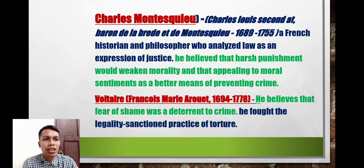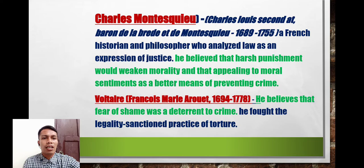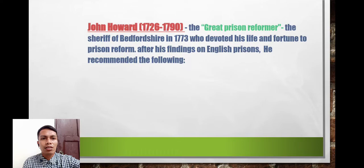Montesquieu believed that appealing to moral sentiments is a better means of preventing crime. Voltaire believed that fear of shame was the deterrent of crime and fought the legality of the sanctioned practice of torture.